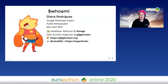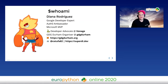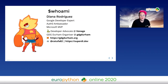Before I get into the subject, let me introduce myself. My name is Diana Rodriguez and I'm a Python Developer Advocate at Vonage. I'm also a Google Developer Expert, Azure Ambassador, and Microsoft MVP — all of which means I'm a person who learns new things every day and loves interacting with the community. You can find me on Twitter at @katufa82 or at my website superdye.dev.